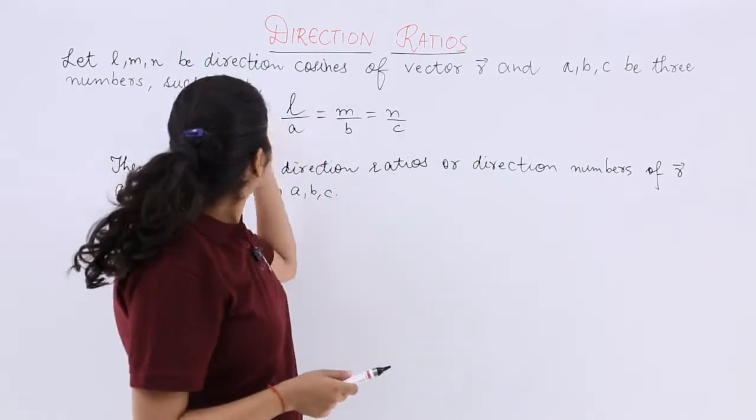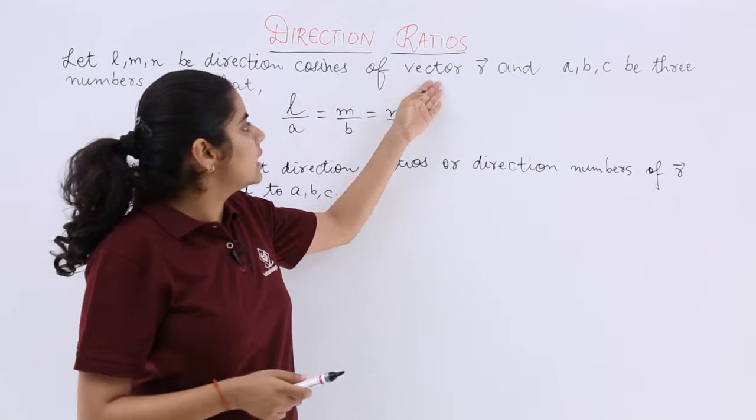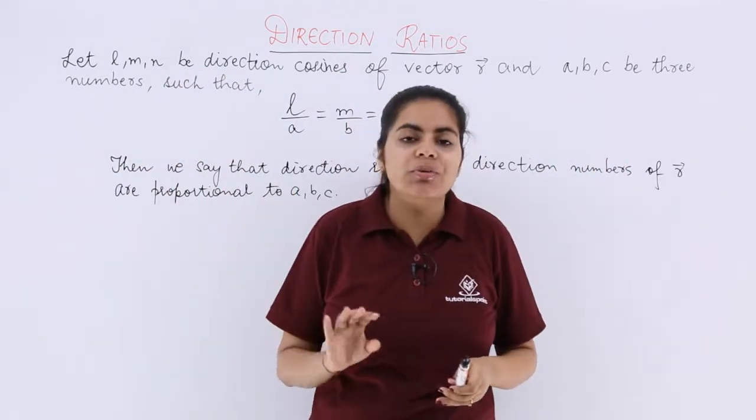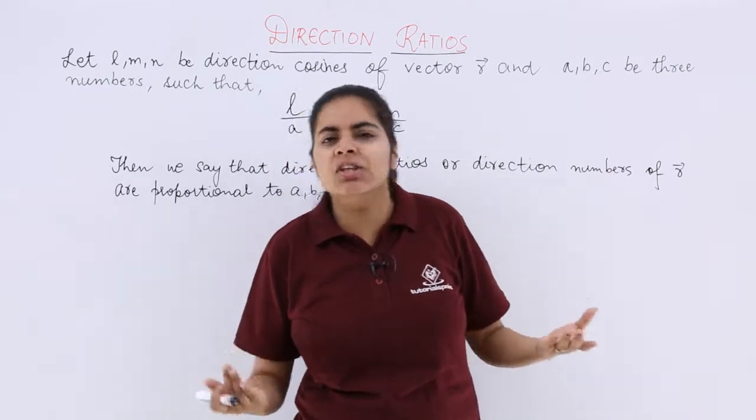Let L, m, n be the direction cosines of vector r and A, B, C be three numbers. So we have direction cosines and any three numbers.